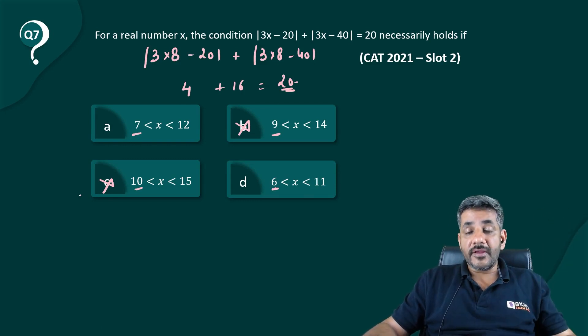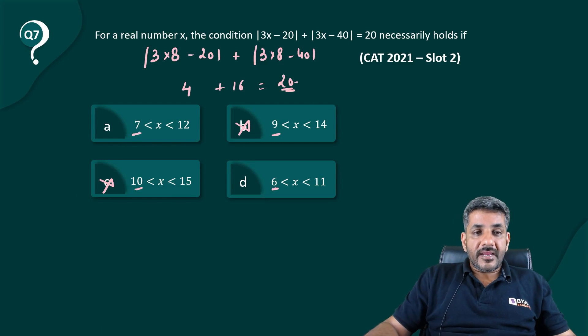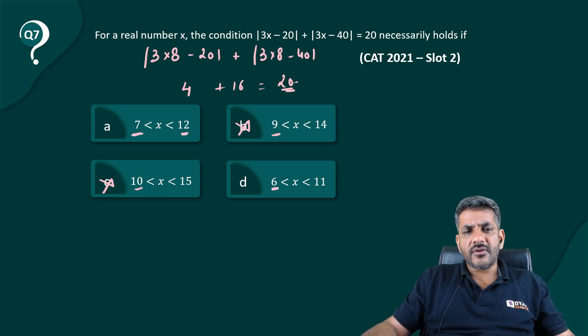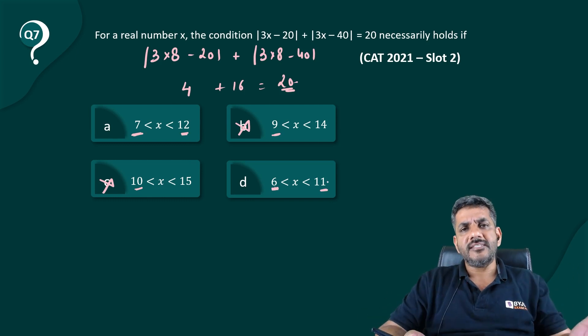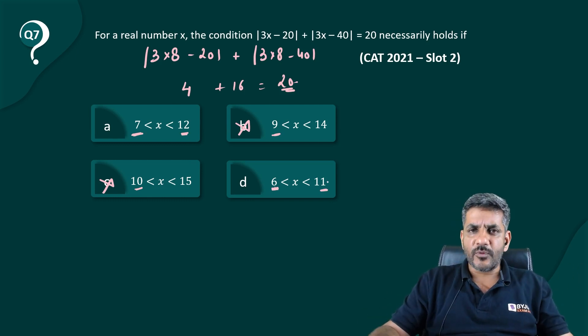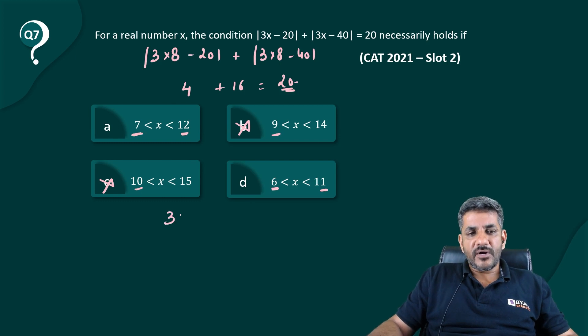Now, how do I eliminate one of A and D? The range of A starts from 7, goes up to 12. Range of D starts from 6, goes up to 11. So I will take a number between 6 and 7 now. Let us take 6.5.